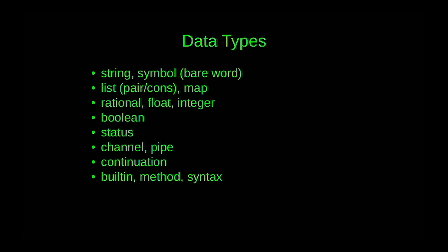Another improvement is that O has a rich set of data types — not just strings. Later shells added arrays but they get convoluted. O has strings and symbols (bare words), lists, maps (associative arrays), part of a numeric tower with rationals, floats, integers, bools, channels, and continuations.